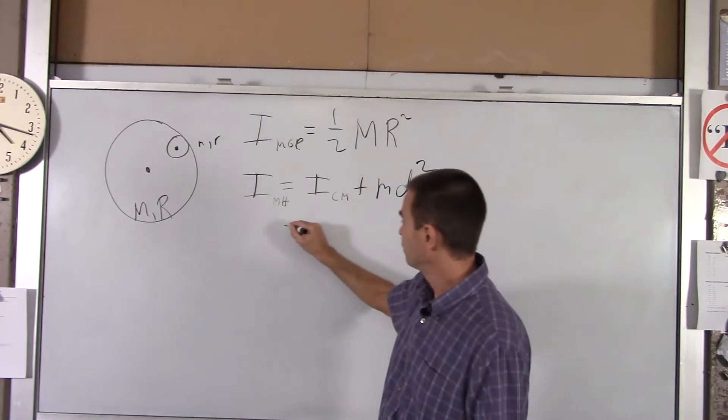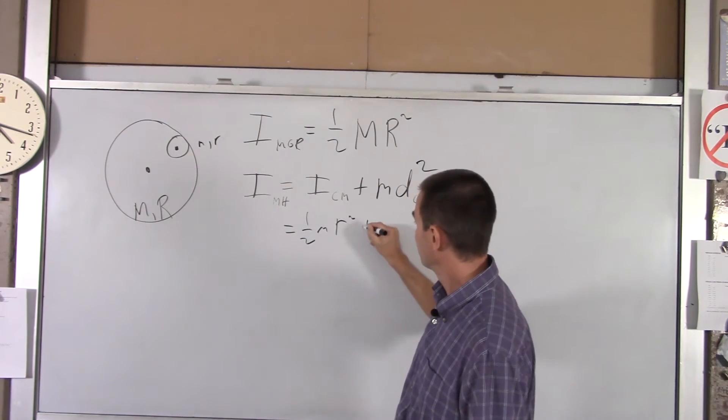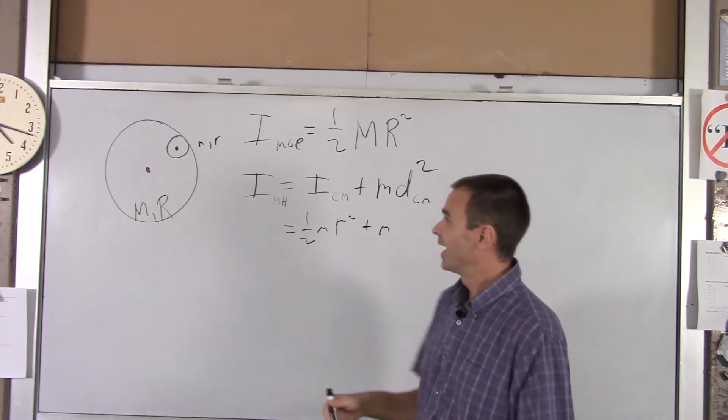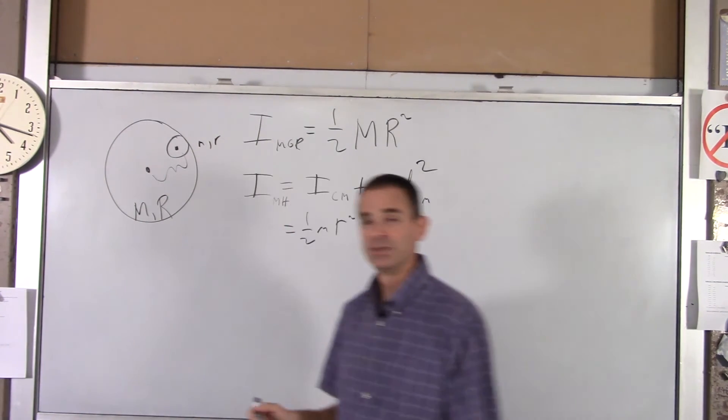So for ICM, well, that's really simple. That's one-half little m little r squared. Plus little m. What's DCM? Well, DCM is this distance here.